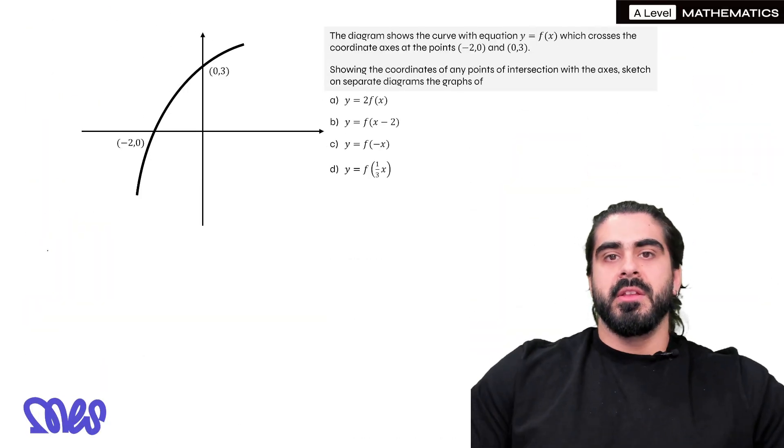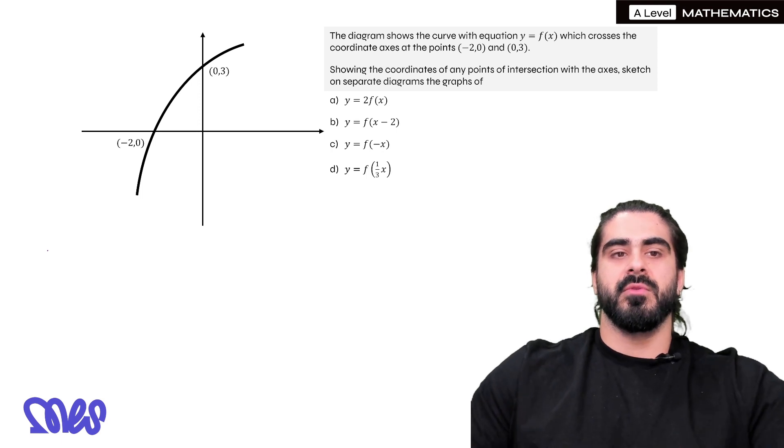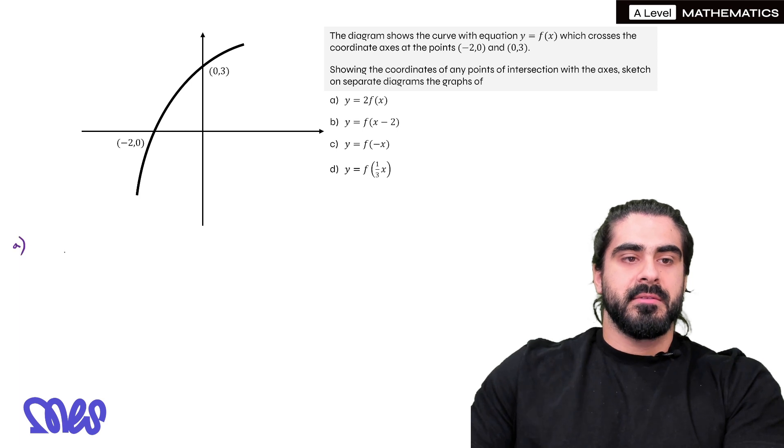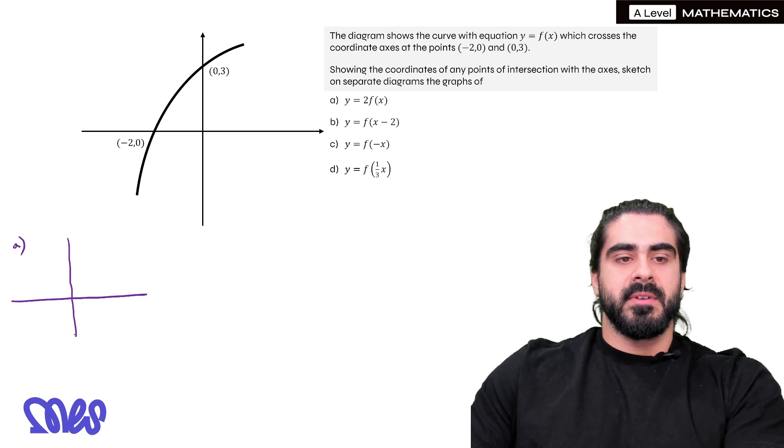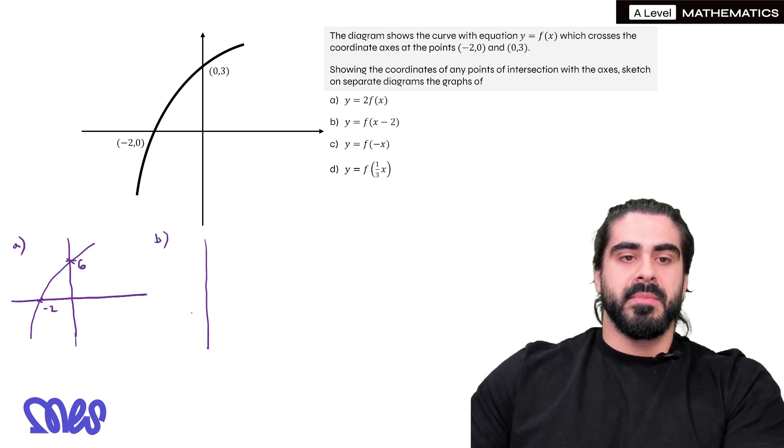Okay. The diagram shows the curve with equation y = f(x) which crosses the coordinate axes at the points (-2,0) and (0,3). Showing the coordinates of any points of intersection with the axes, sketch on separate diagrams those four graphs. So part a, 2f(x). So that's affecting the y values and it's going to multiply all of them by 2. So anything that gets affected is (0,3) because the y value of (-2,0) is 0. So it's going to have the exact same shape minus 2 and cross the y-axis at 6.